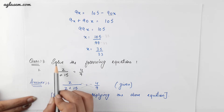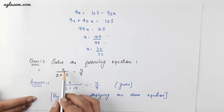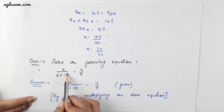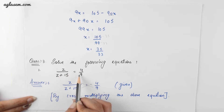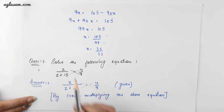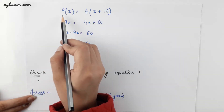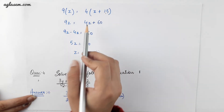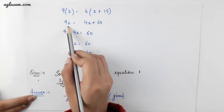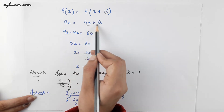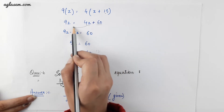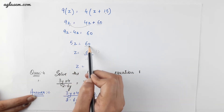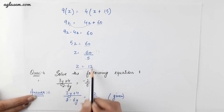Coming to question number 3: solve the following equation, which is z upon (z plus 15) is equal to 4 by 9. Simply doing the cross multiplication we will get 9z is equal to 4 into (z plus 15). By solving the equation we will get 9z is equal to 4z plus 60. Moving the variable term to one side we will get 5z is equal to 60, so z is equal to 12.